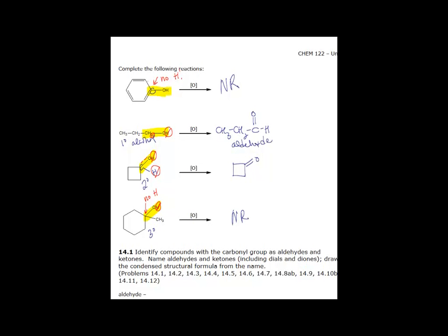So to summarize, a primary alcohol upon oxidation will give you an aldehyde. A secondary alcohol upon oxidation will give you a ketone. And a tertiary alcohol, when oxidized, will give you no reaction.